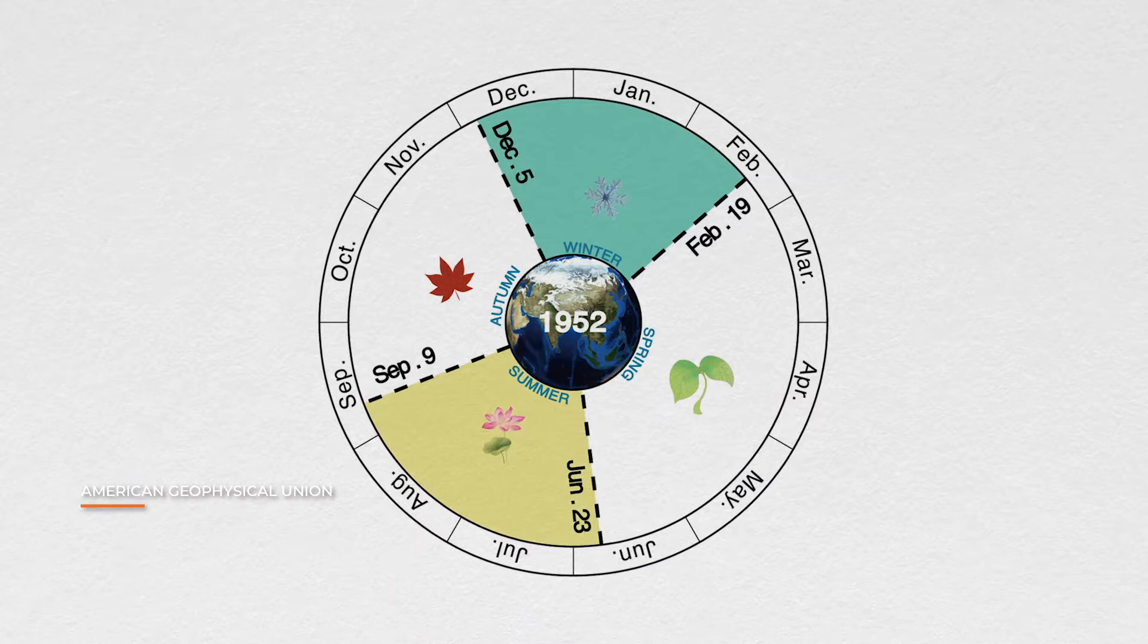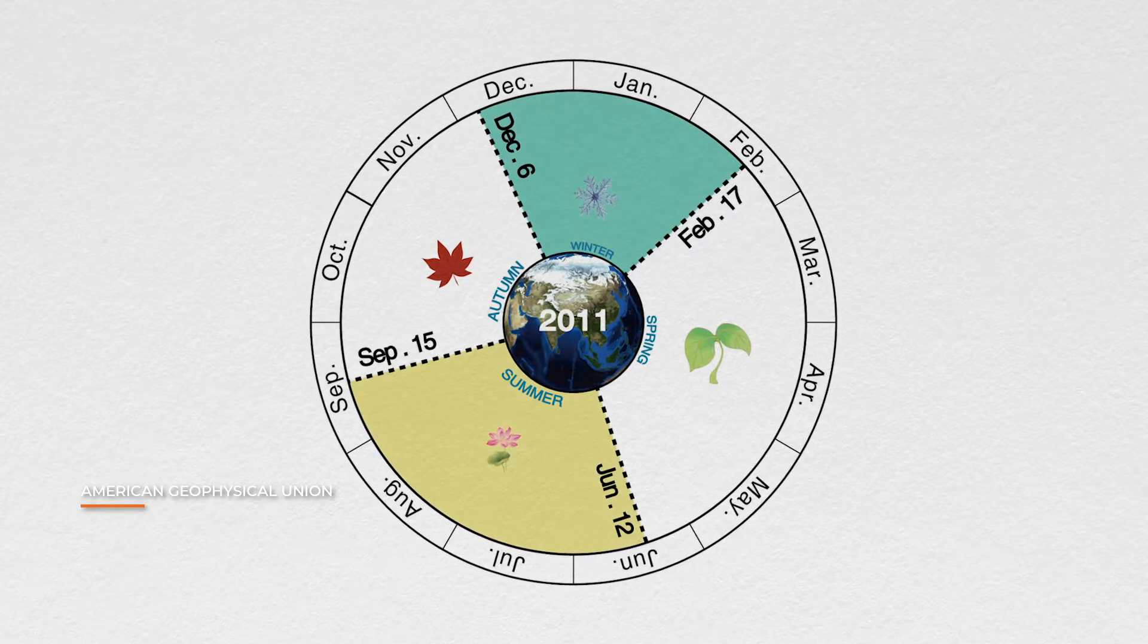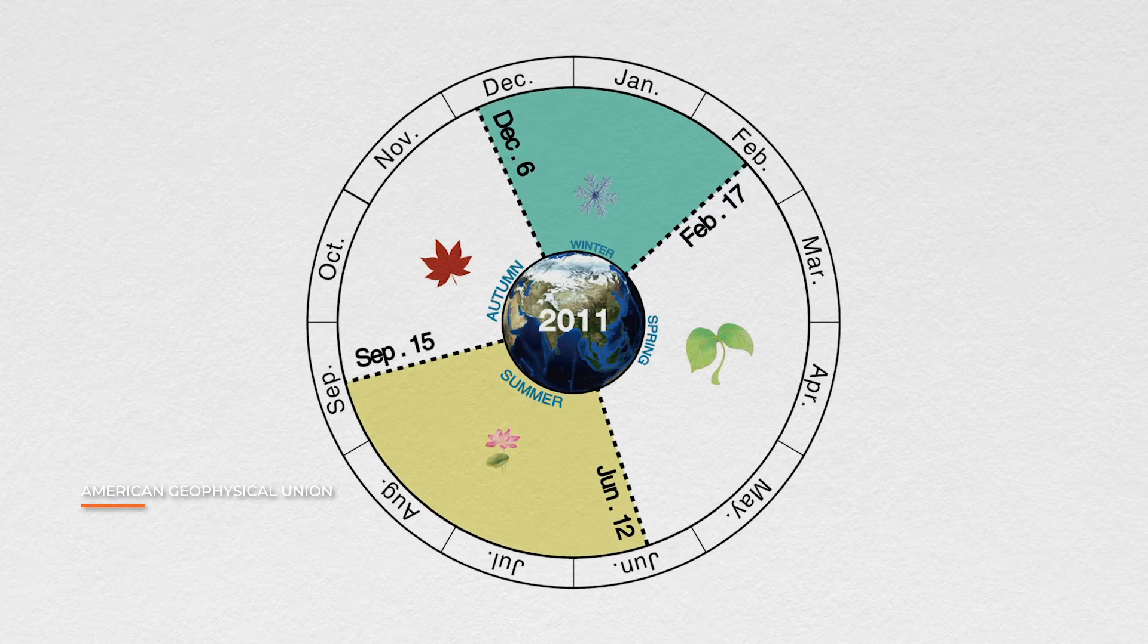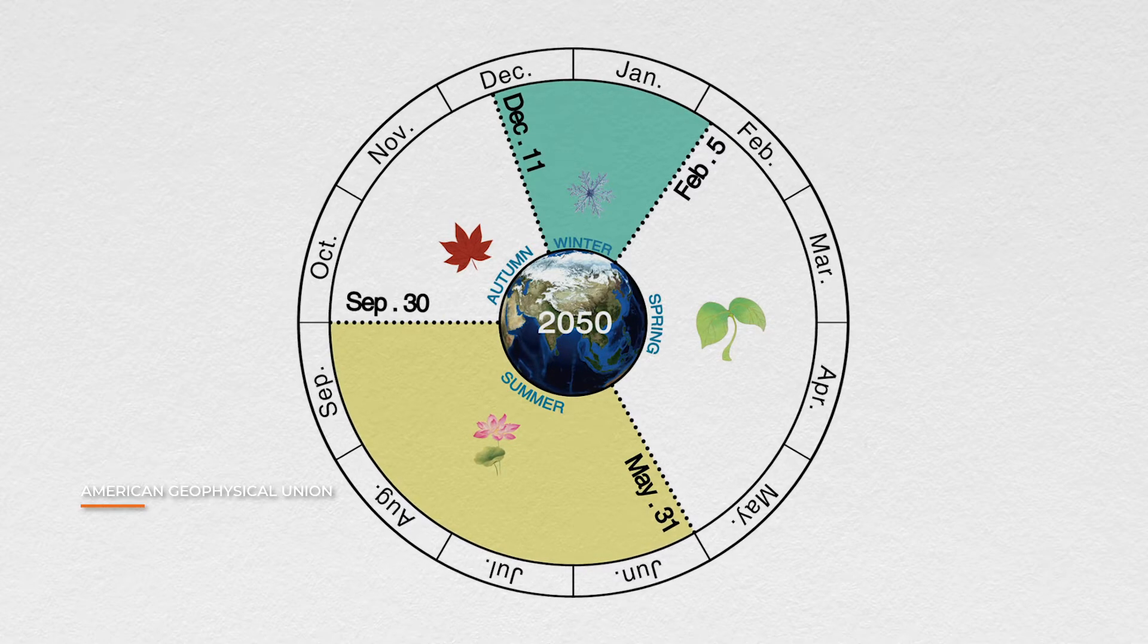In 1952, summer lasted 78 days. By 2011, summers were around 95 days long. The study says by 2050, summers will last 120 days and winters 31.